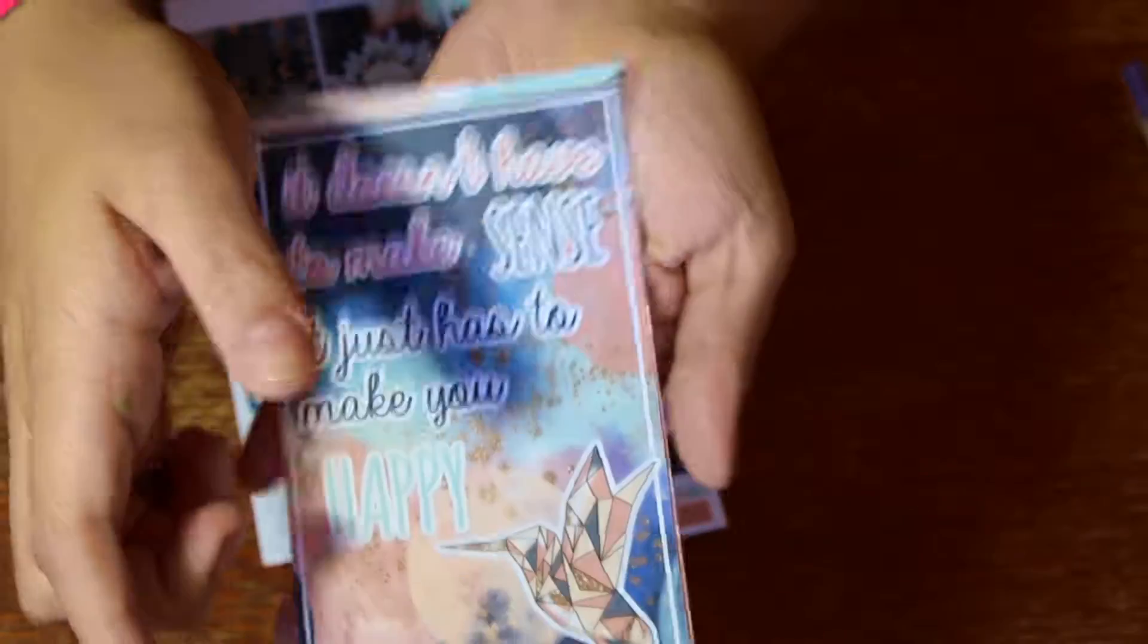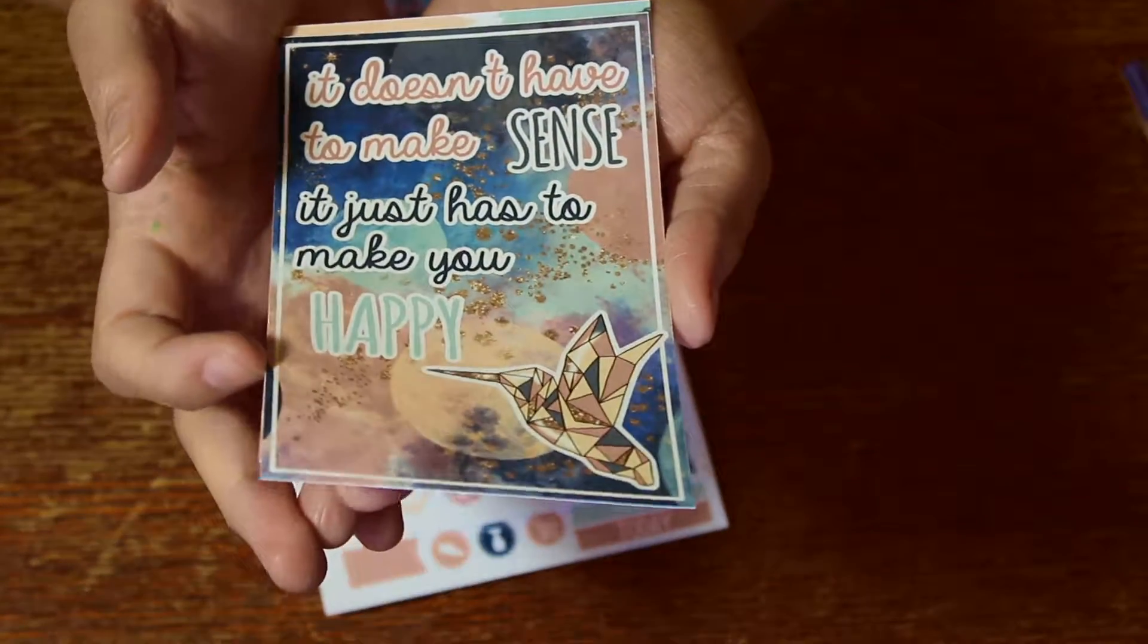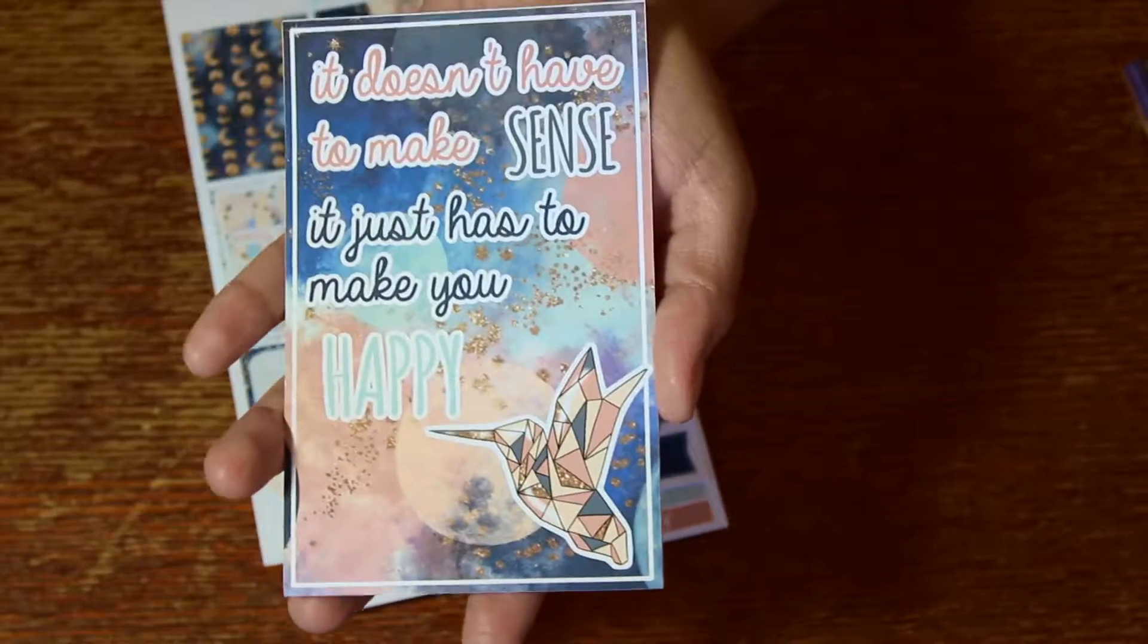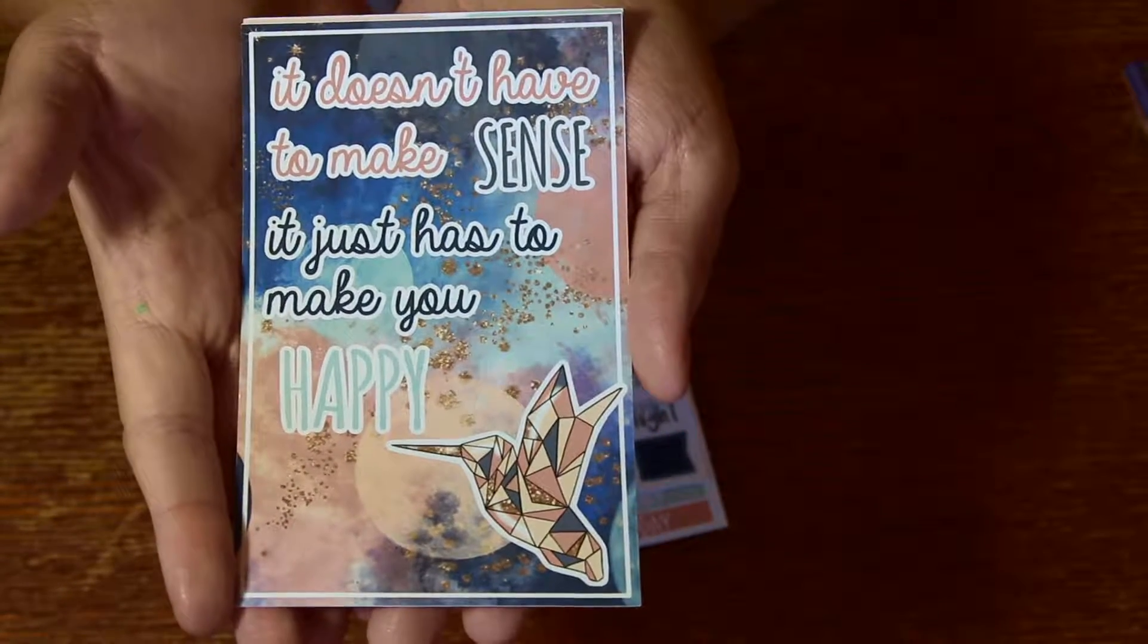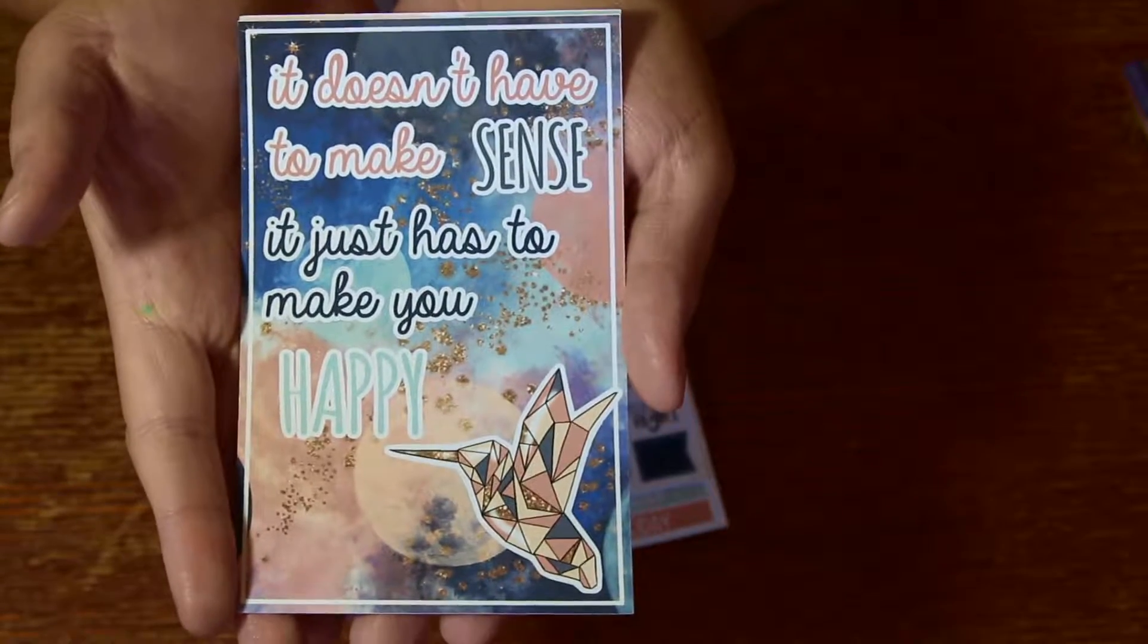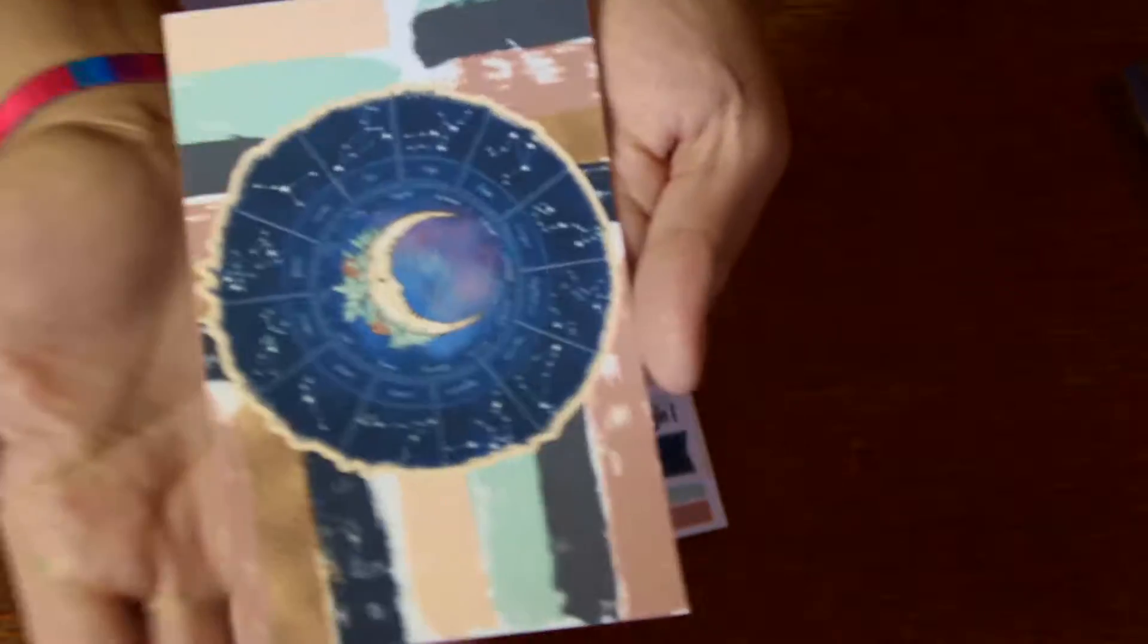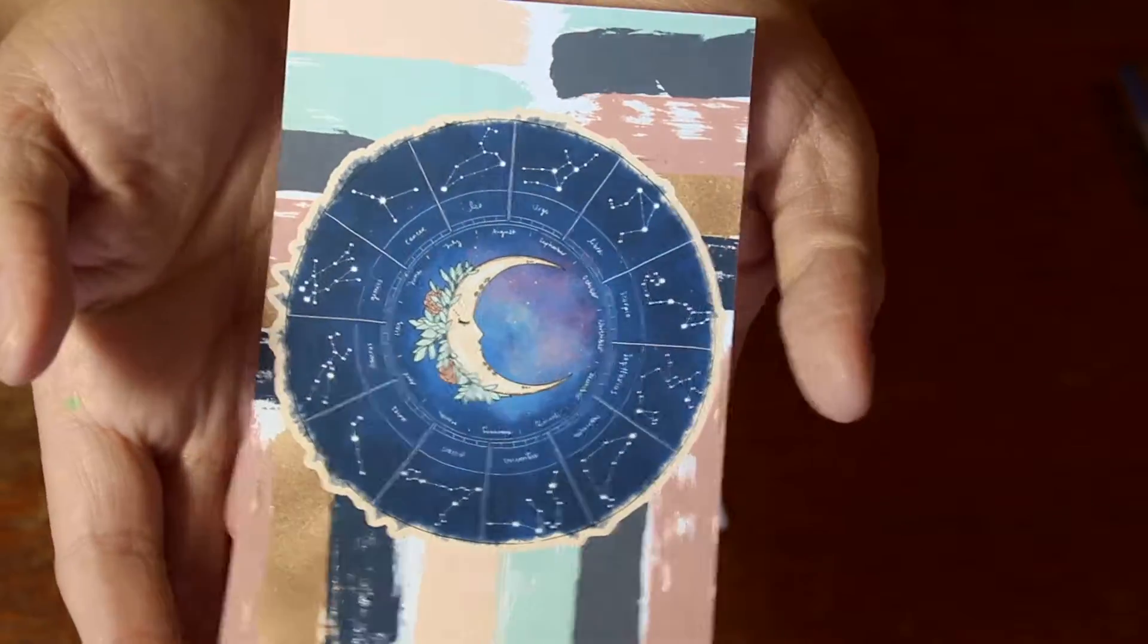Next you have these two thicker cardboard, I wouldn't say dashboards, like almost journaling cards, cardstock sayings. This one is absolutely gorgeous. It says it doesn't have to make sense, it just has to make you happy and I love that. That is really cute. I'm also going to laminate it, save it because it's just too precious. Next one here is another one of those moons with the zodiac around them and some paint strokes. So again, that folksy celestial feel. So I'm loving it.